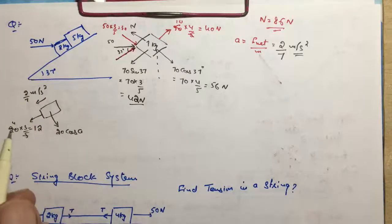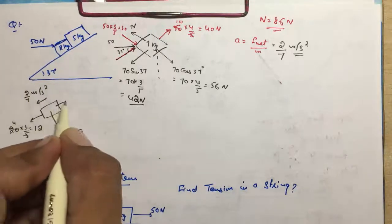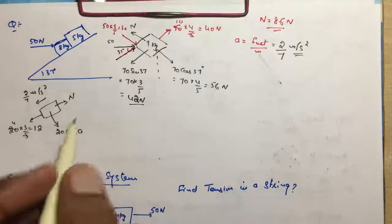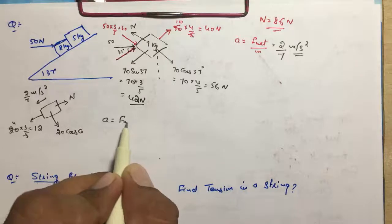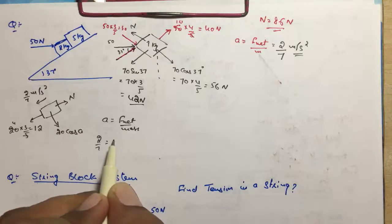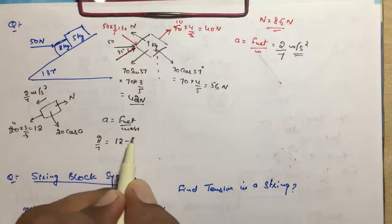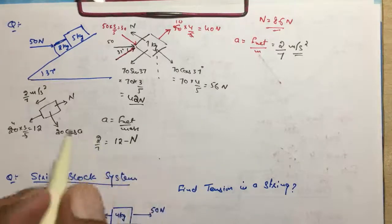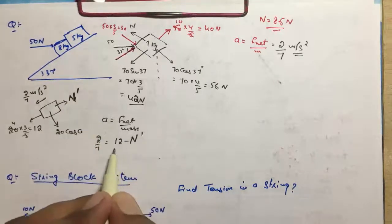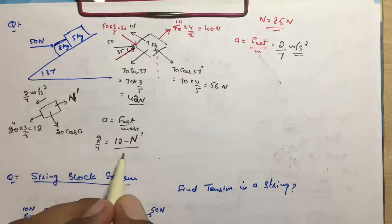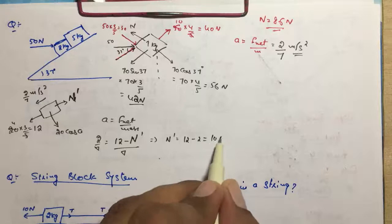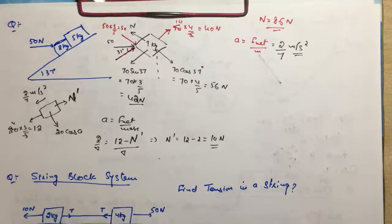अगर यह force ना होती तो दोनों g sin theta से चलते। अब मुझे normal action बतानी है इस direction में — that is normal action on 5 due to 2. Acceleration is equal to F net upon mass. Acceleration कितनी है: 2 by 7. F net हमें पतानी है — नीचे की तरफ 12 minus N' (normal action on 2). Divided by mass — 7 से 7 कट गया. This implies N' = 12 − 2 = 10 newton.